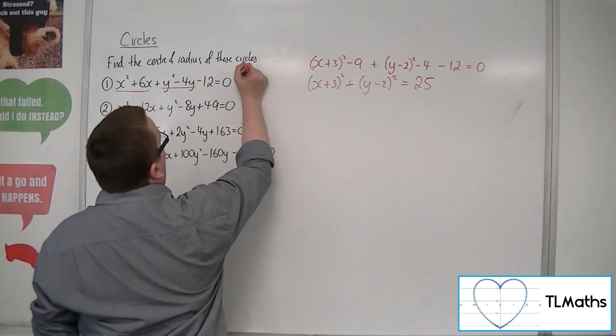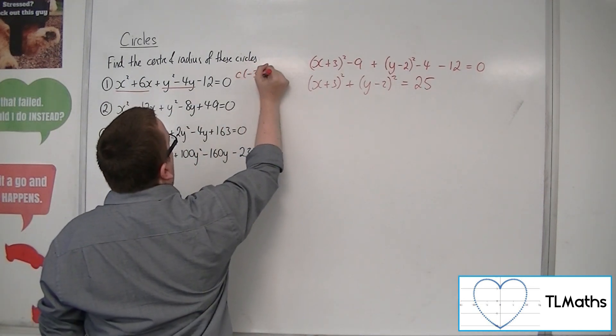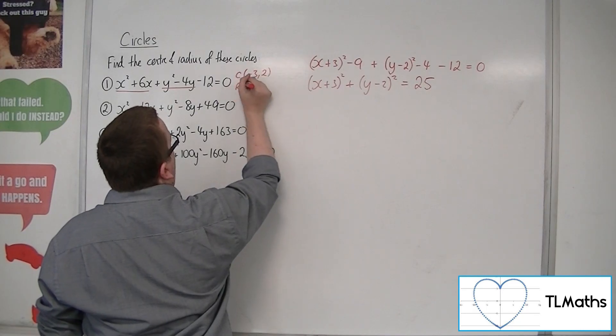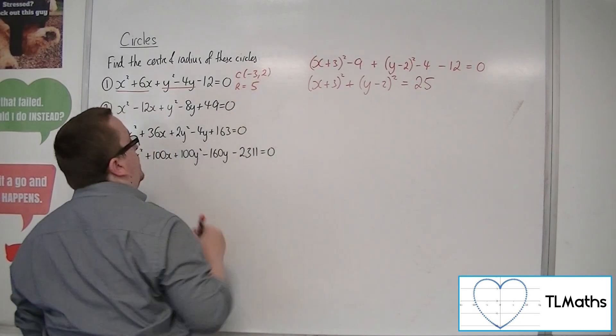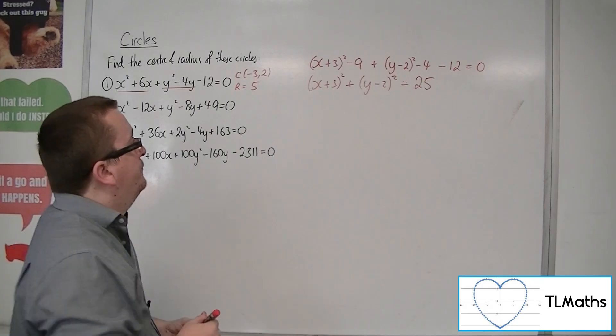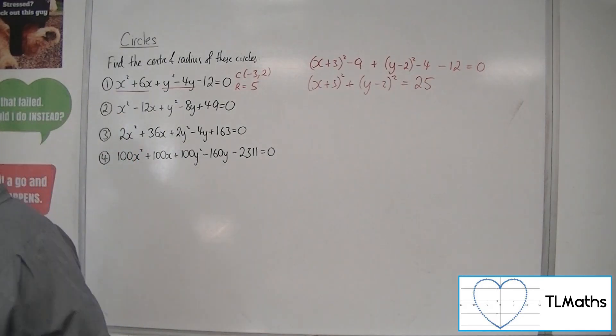And so I can now say that the centre is at minus 3, 2, and the radius will be equal to square root 25, so 5. And that is your first one.